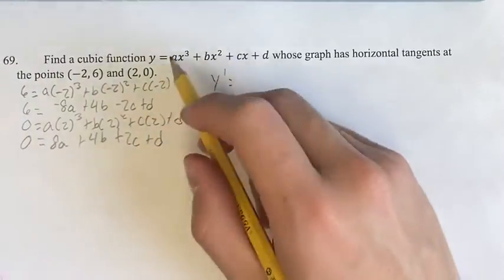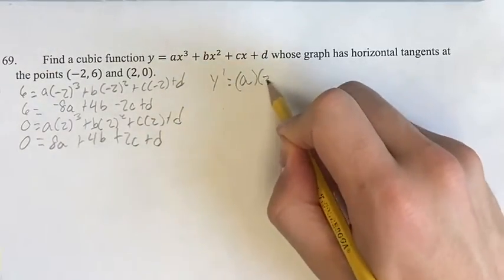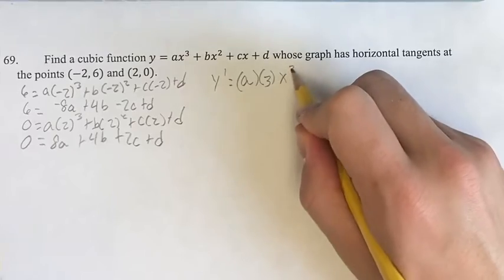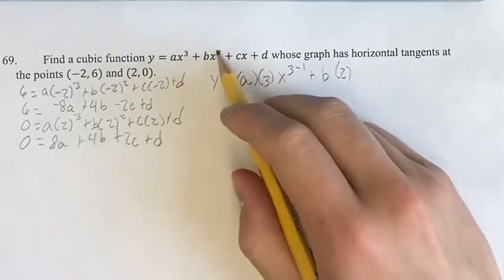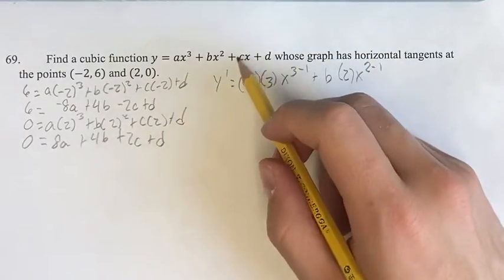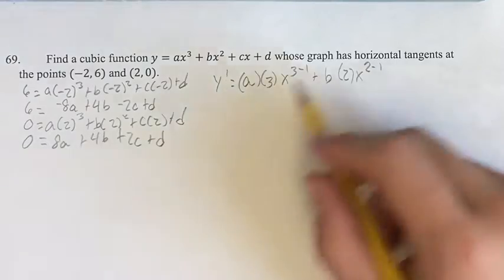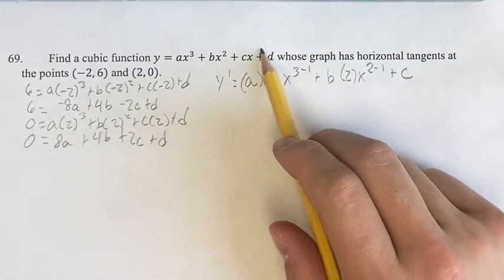Well, with this power function right here, you take the coefficient, bring it out first, multiply it by the exponent, and then subtract 1 to get your new exponent. Same thing here, coefficient, exponent, new exponent, old one minus 1. If you have a term with just an x in it, you just take the coefficient and add that, and then the derivative of a constant is 0.